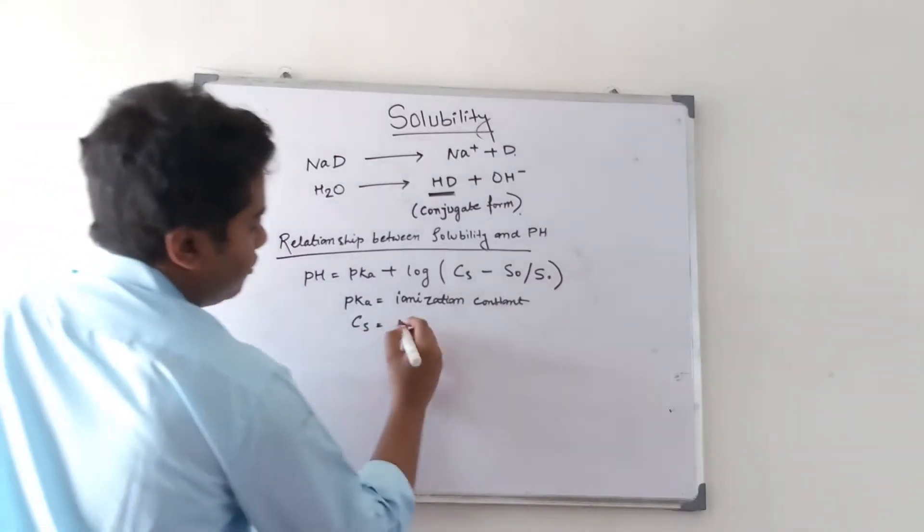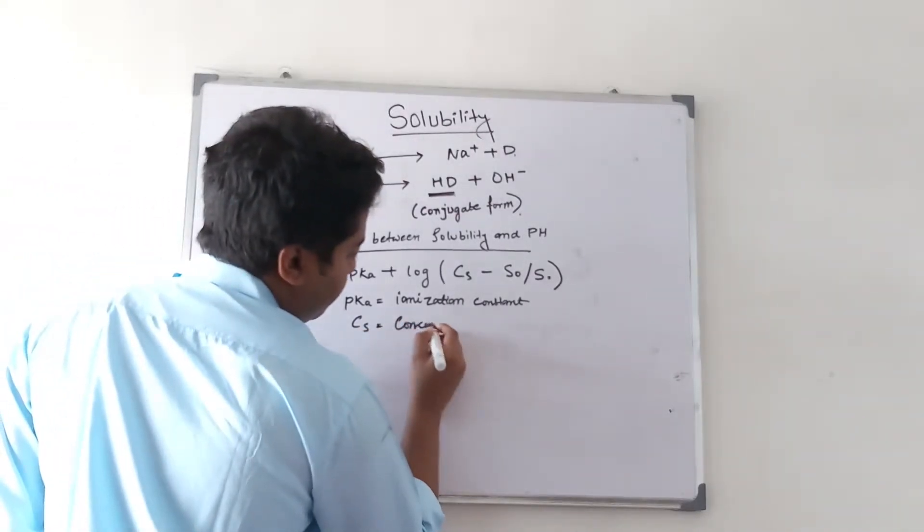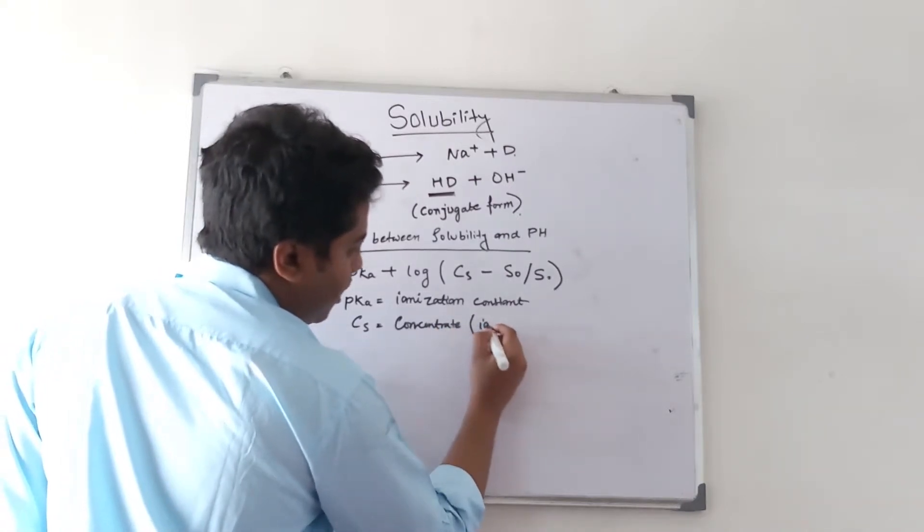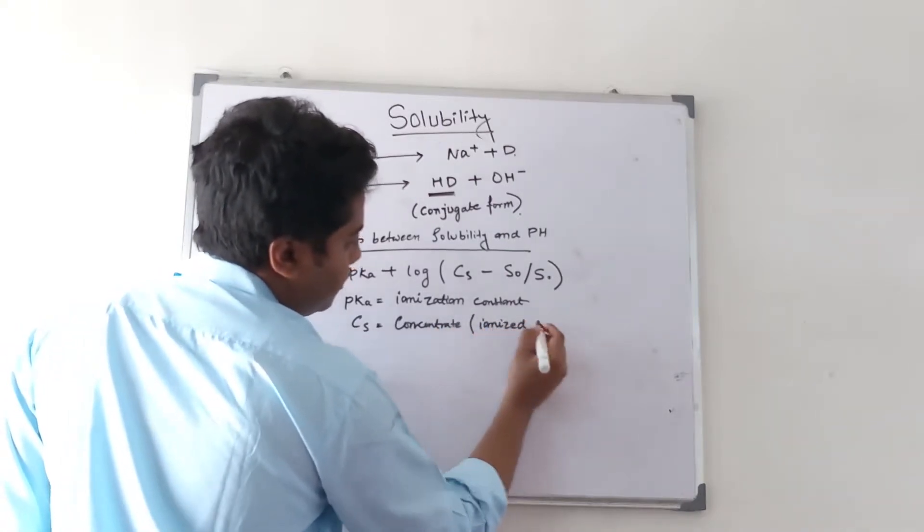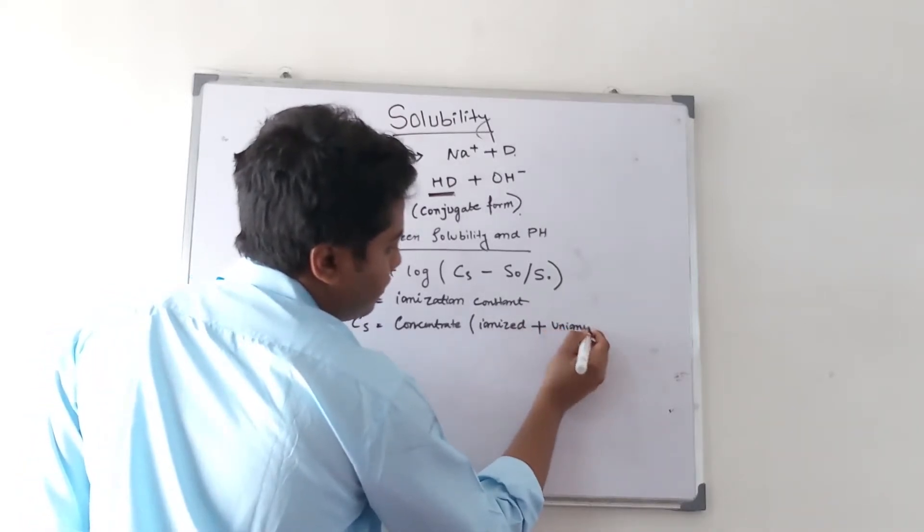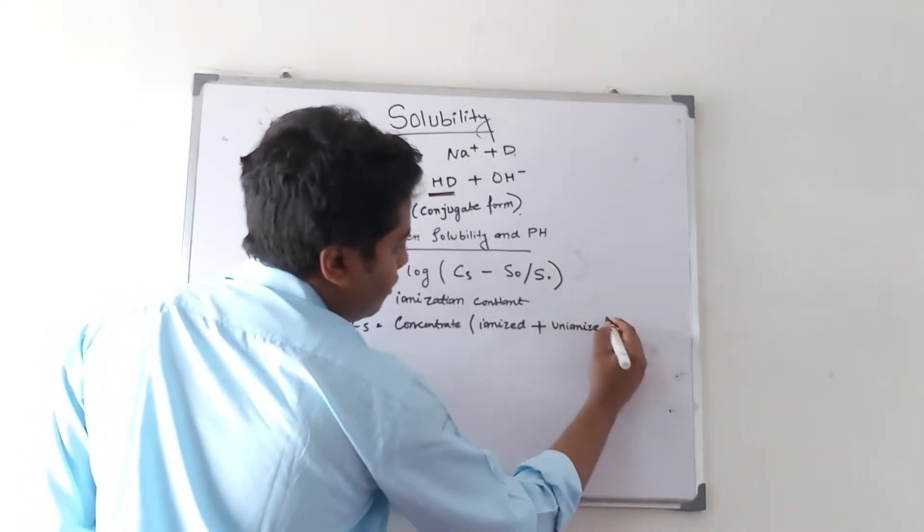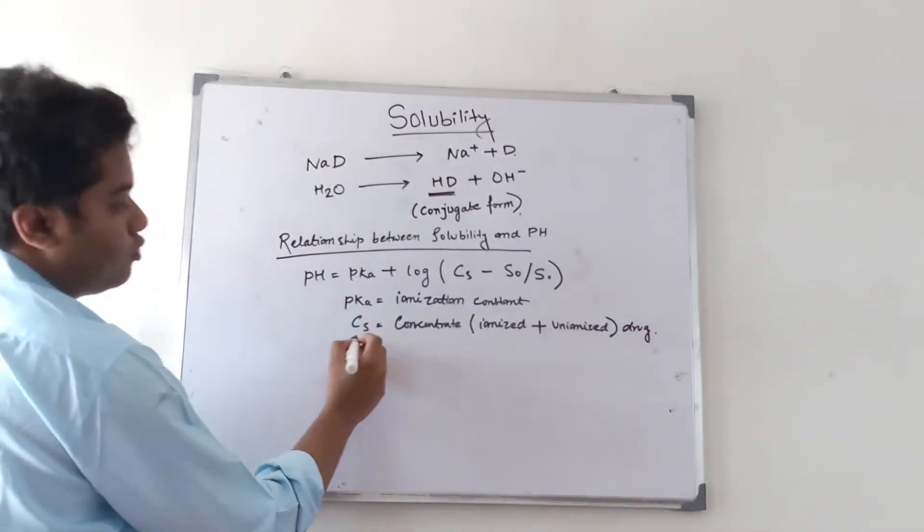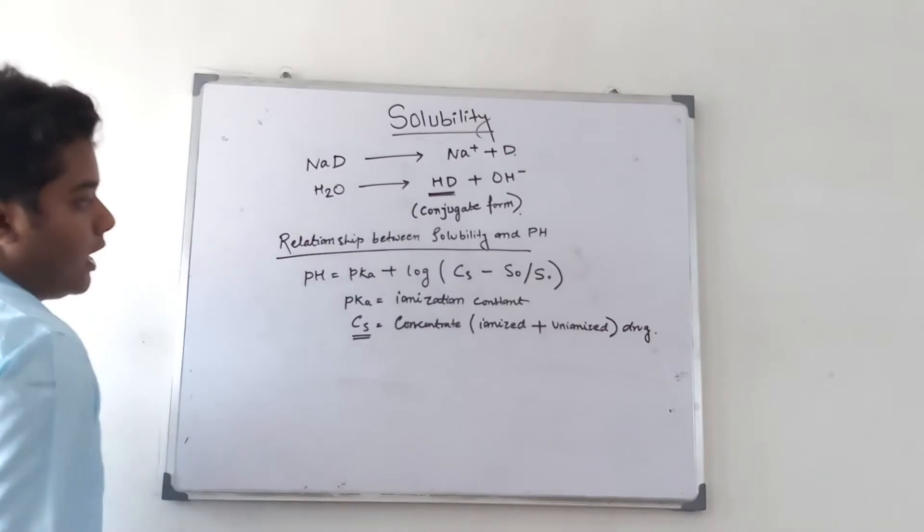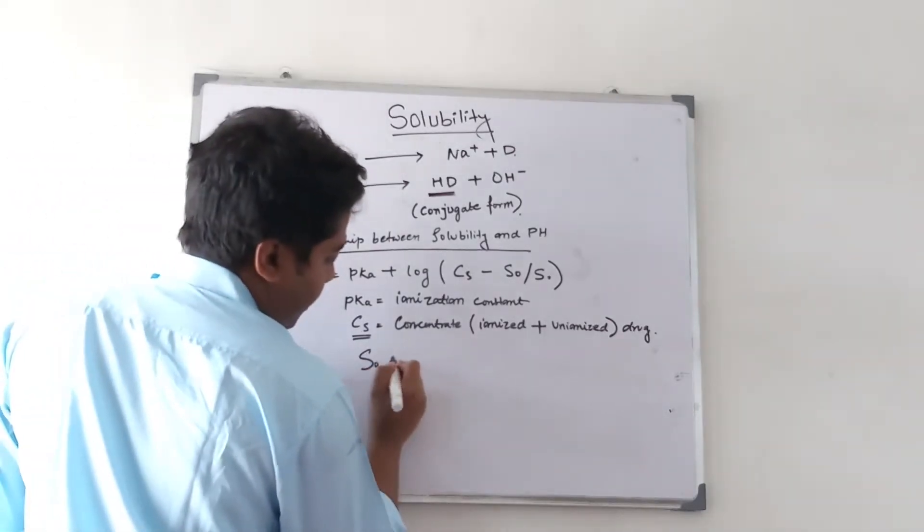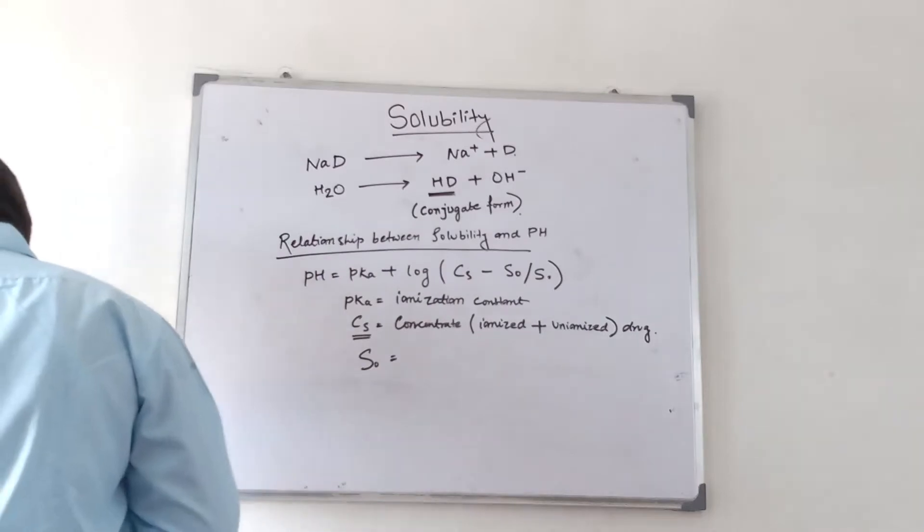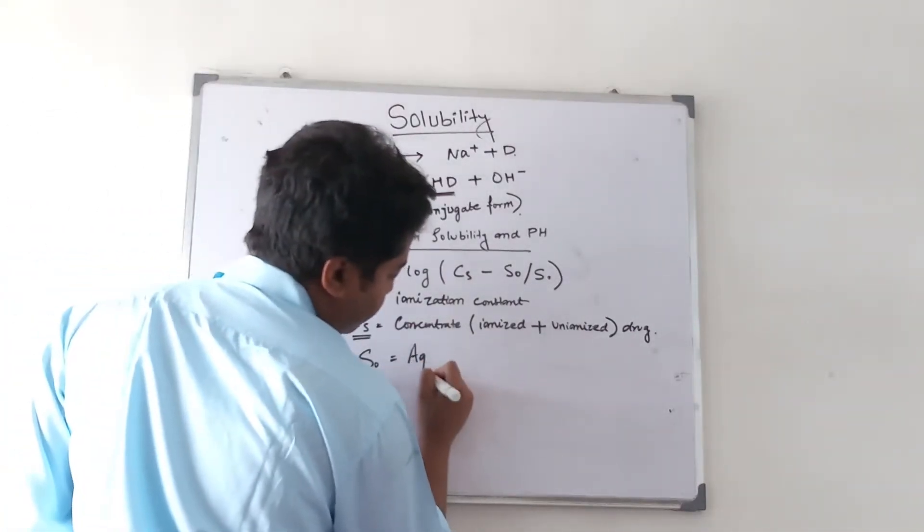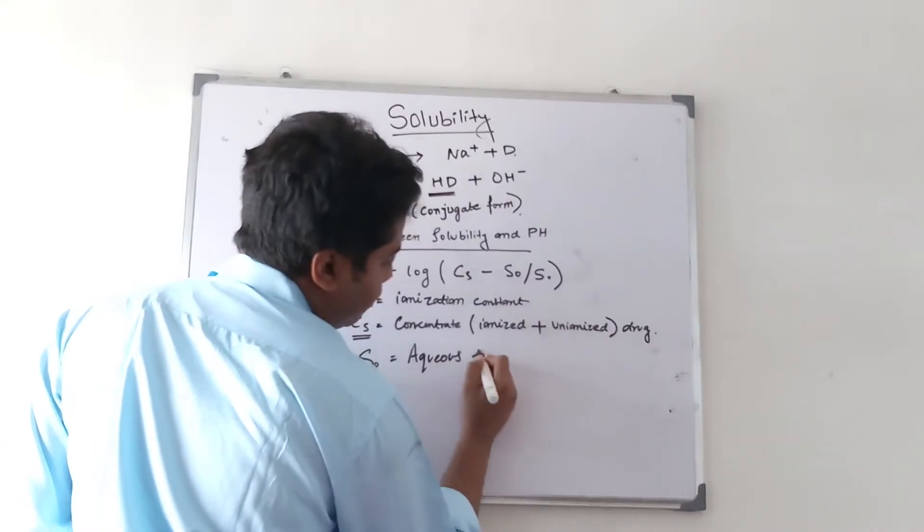Cs is the concentration of both ionized and un-ionized forms of drug. This is the total concentration. S0 is the aqueous solubility.